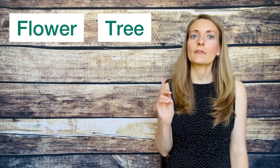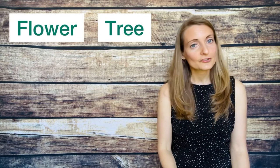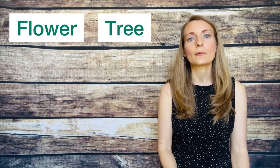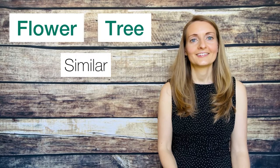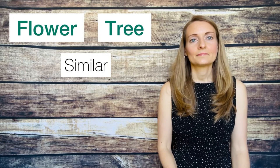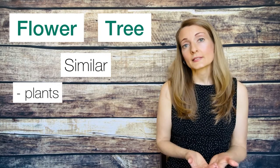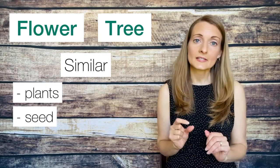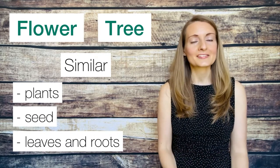Now let's do the same thing using two words. Let's look at these words, flower and tree. Think about what a flower is like and what a tree is like, and now whisper how a flower and tree are similar. They both are plants, they both start out as a seed, they both have leaves and roots, and maybe you thought of some other ways they are similar.